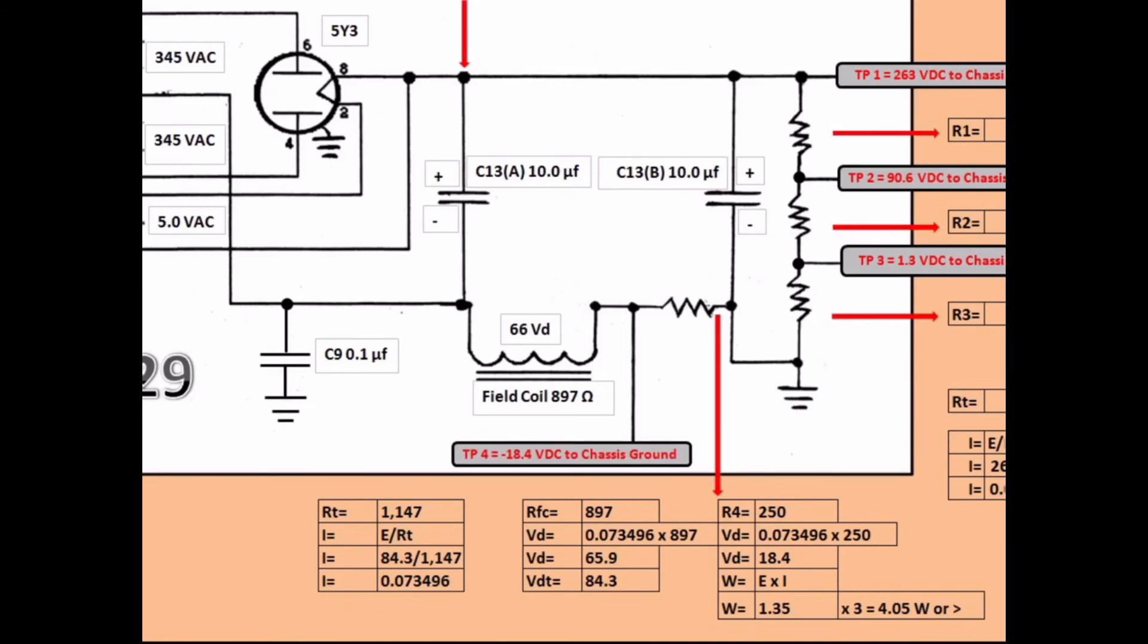Now understanding that voltage drop of around 17 to 18 volts that I'm seeing in the radio, and how it's calculated, and the theory behind it at a high level. I can calculate what my wattage or power requirements are for that resistor as well, the 250 ohm.